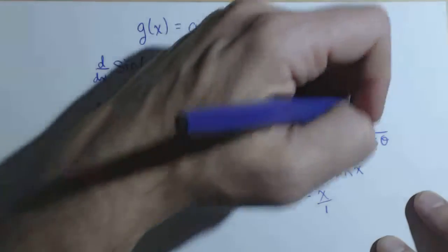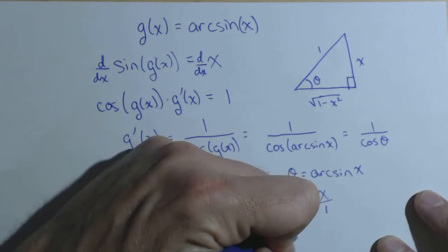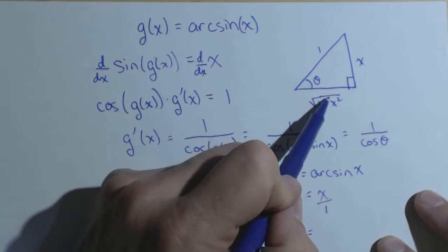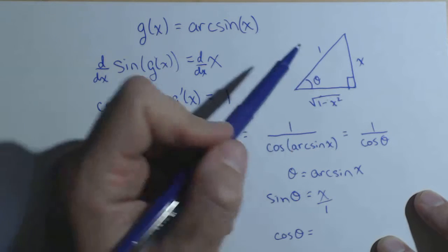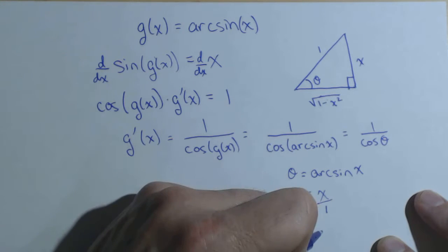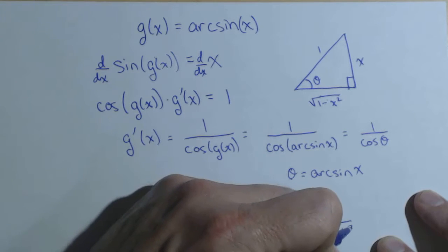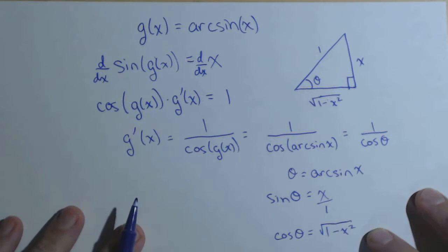Well, if that's true, then cosine of theta, which is the adjacent over the hypotenuse, is the square root of one minus x squared over one, but I'm not going to write the over one.